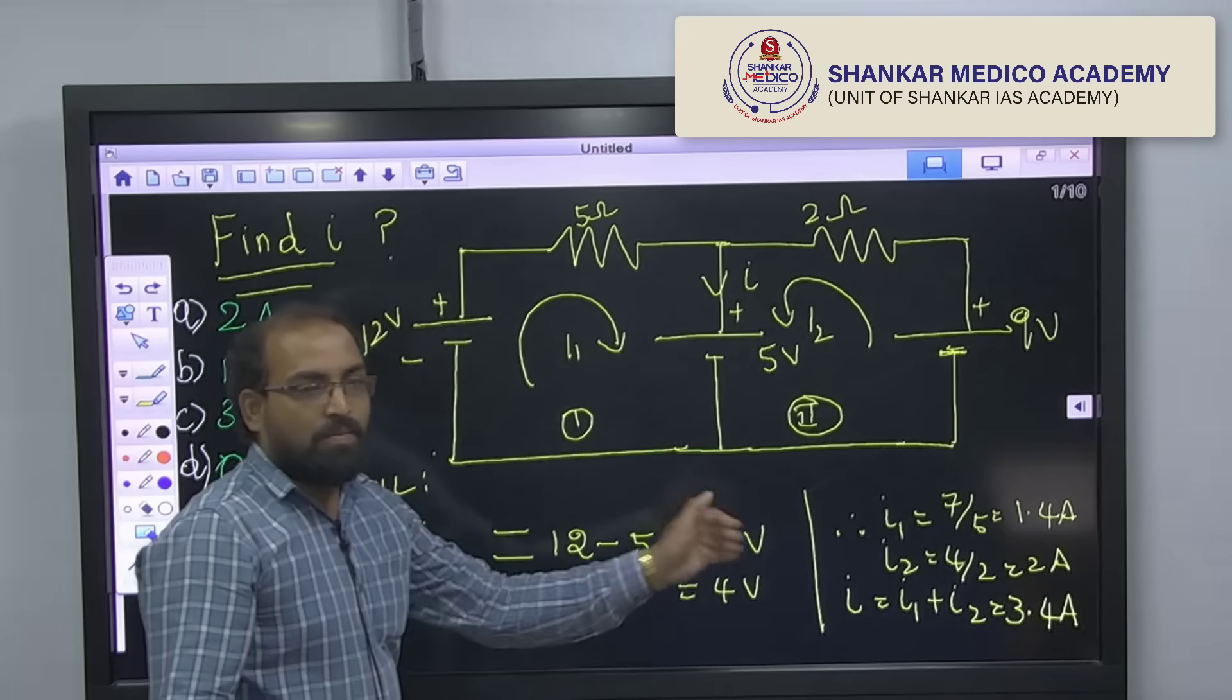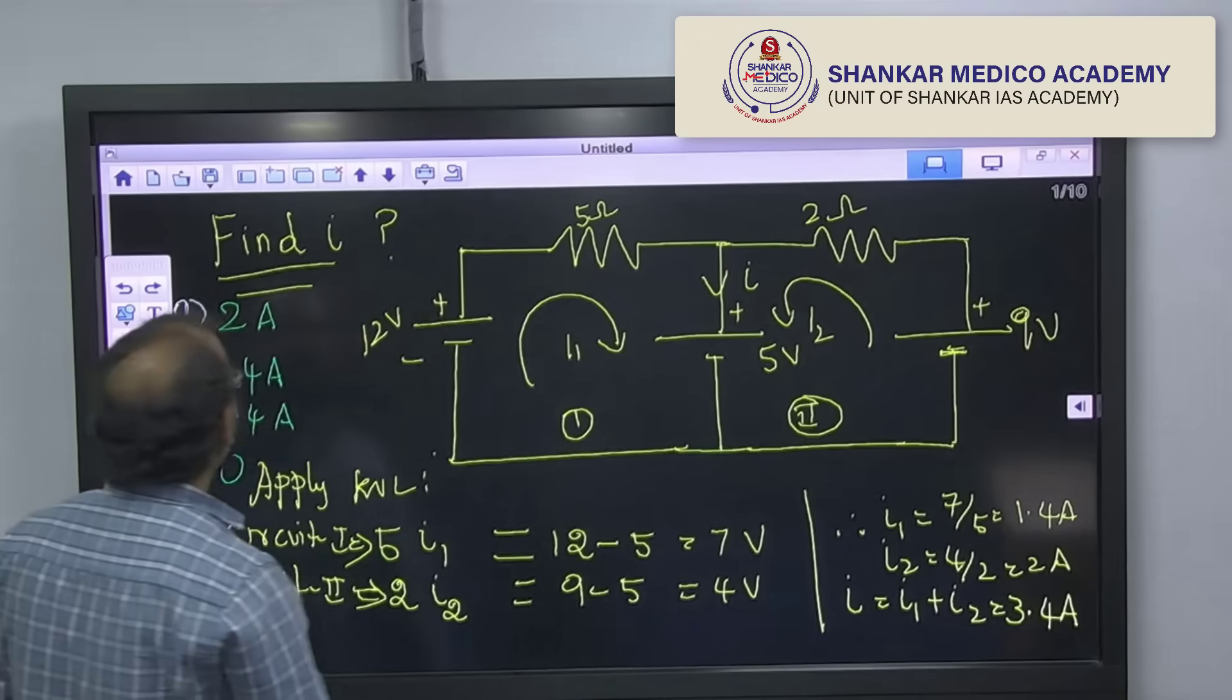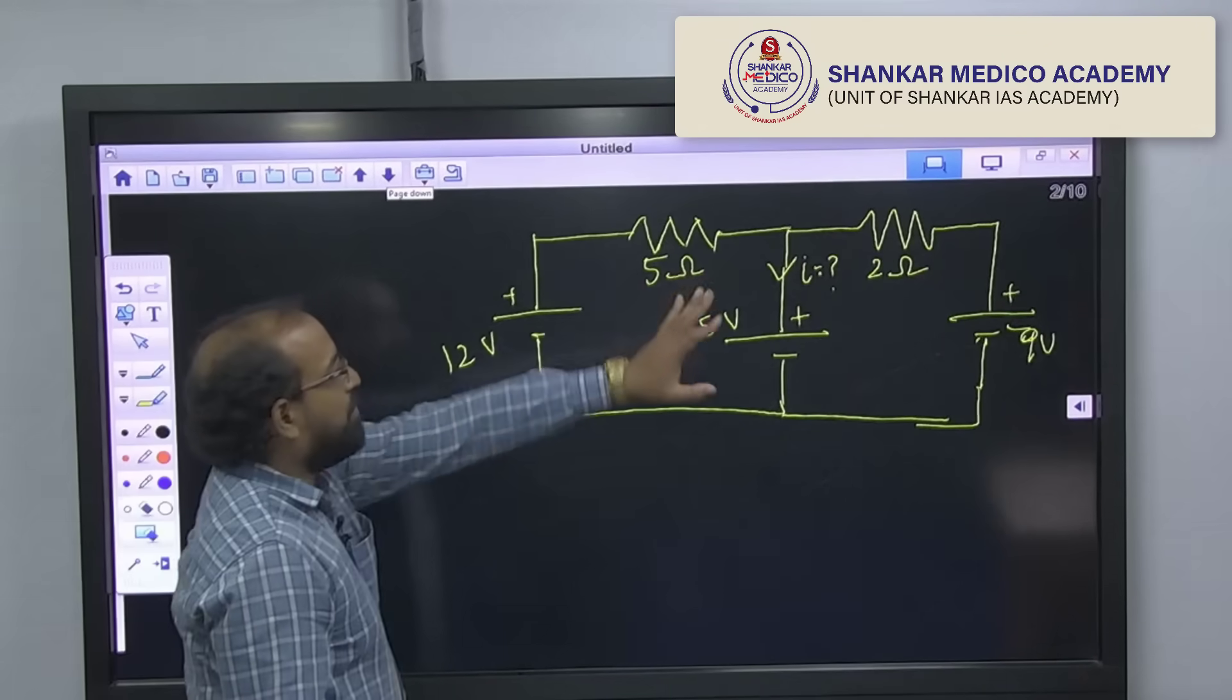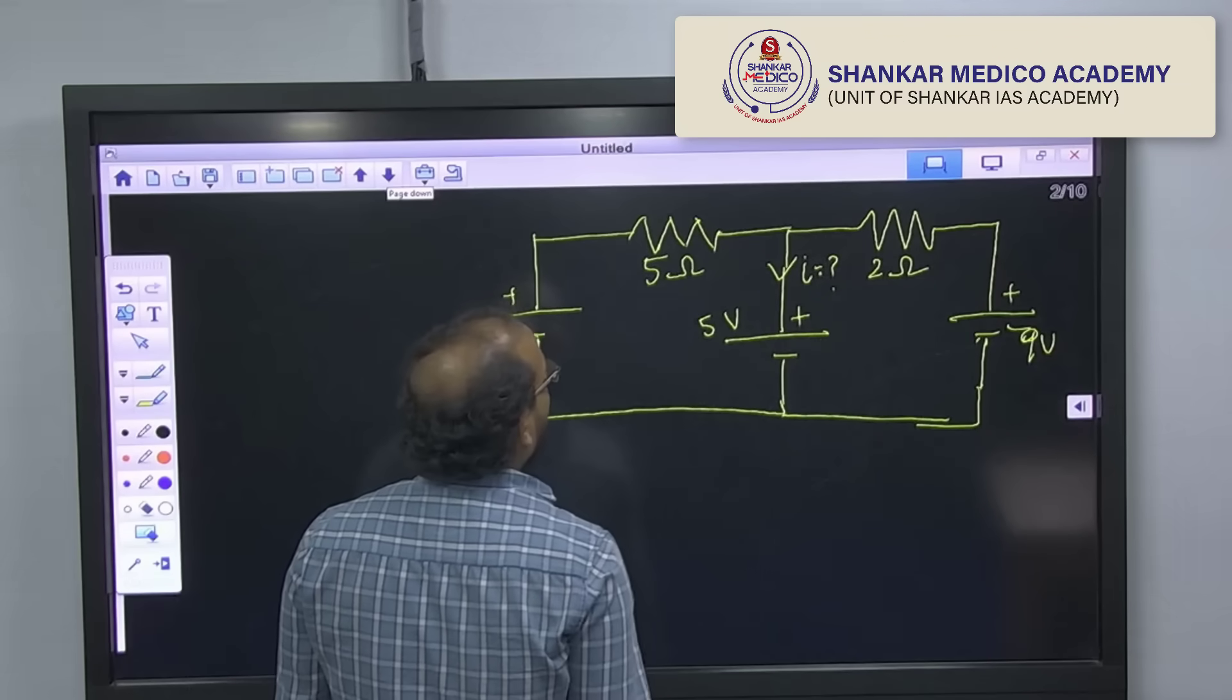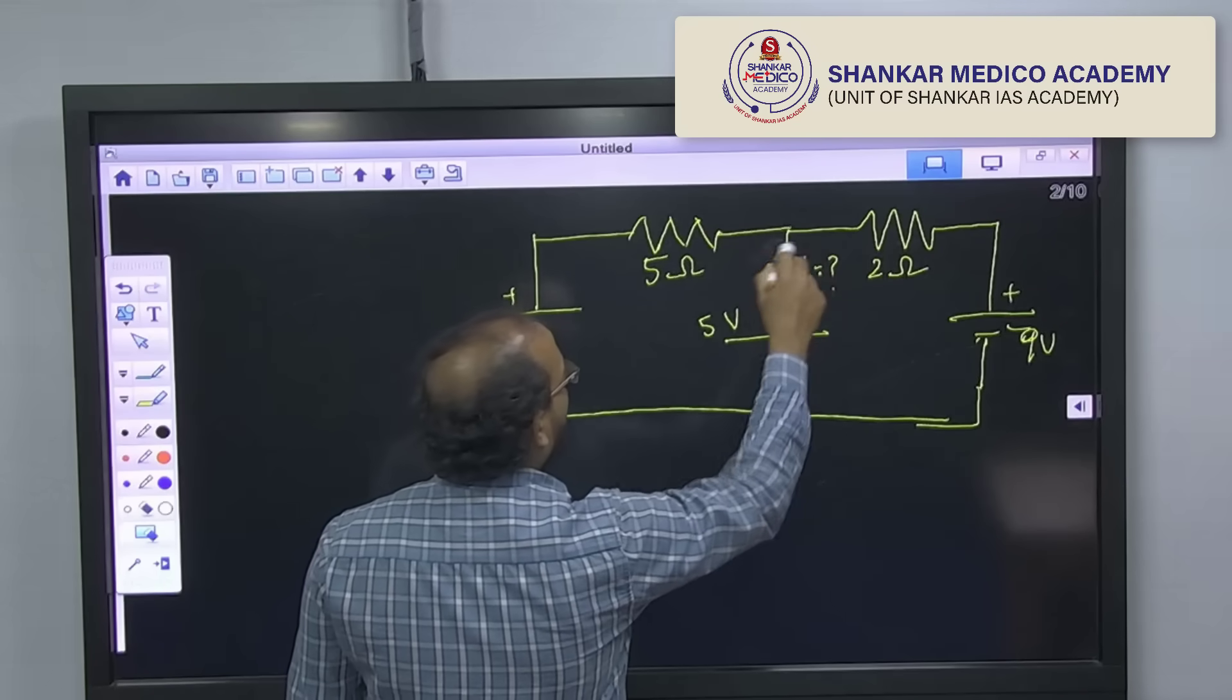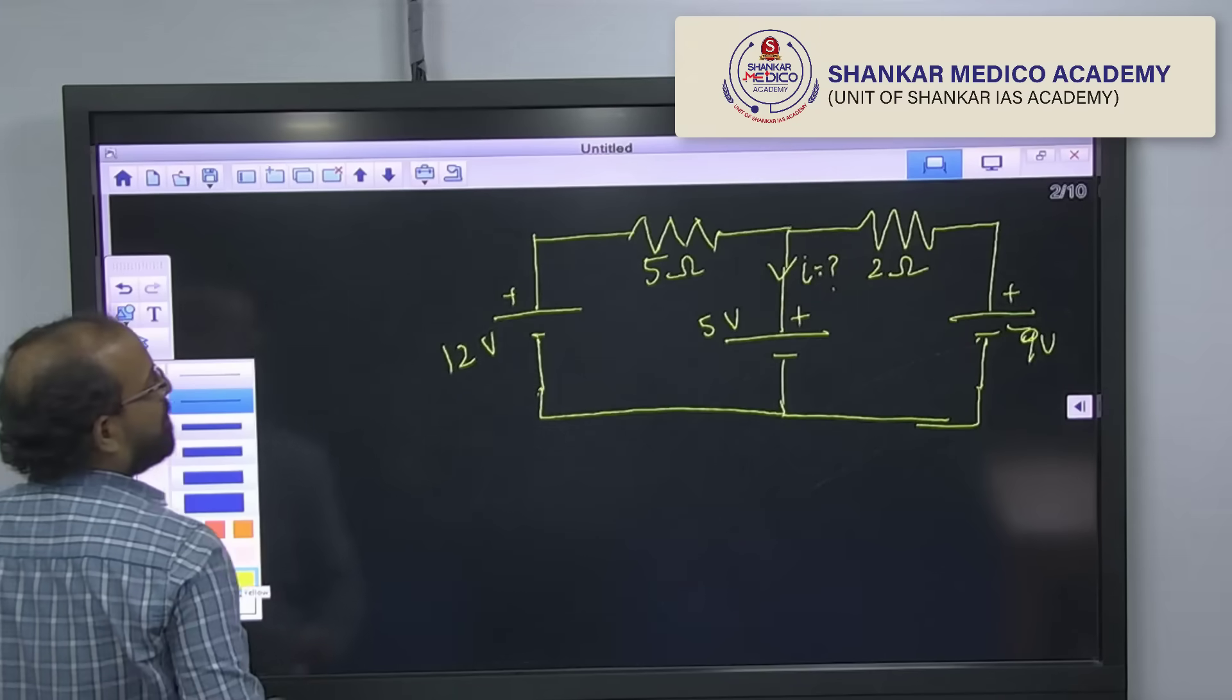To solve like this, you will take more than 2 minutes. Let us see how we can easily solve this within fraction of second. So, the same circuit, 12 volt, 5 volt, 9 volt is given and resistance 5 ohm, 2 ohm is given and I we have to calculate. Let us see.